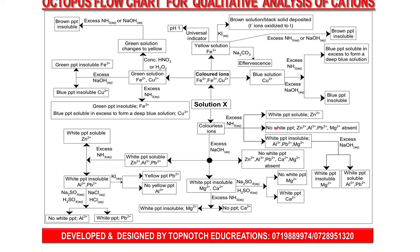If there is no white precipitate with aqueous ammonia, then zinc, aluminum, lead, and magnesium are absent. To differentiate the PALM group — lead, aluminum, and magnesium — add sodium hydroxide until in excess. White precipitate insoluble is magnesium; white precipitate soluble is lead and aluminum. To differentiate lead and aluminum, refer back to the earlier methods.